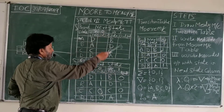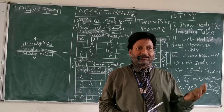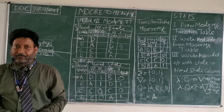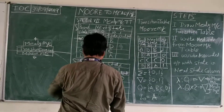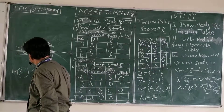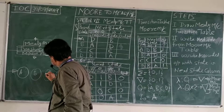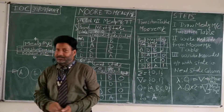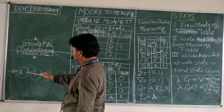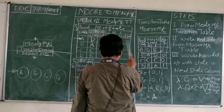This is the Moore machine transition table, and this is the Mealy machine transition table. If we have four states A, B, C, D, where A is the initial state, let us now draw the transition diagram. For the Moore machine, output is associated directly with the state. So for state A, the associated output is 1.